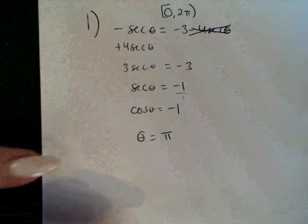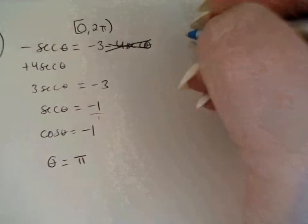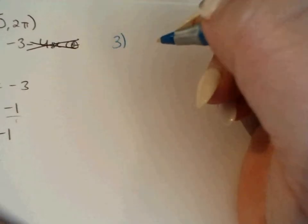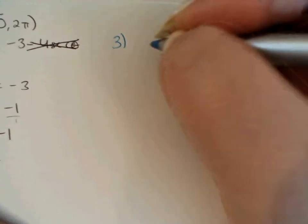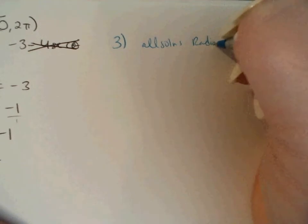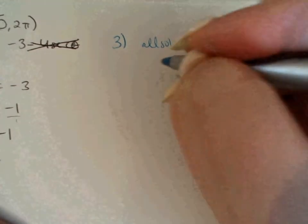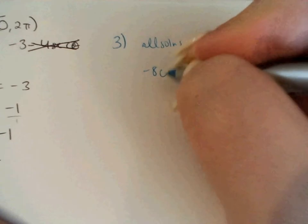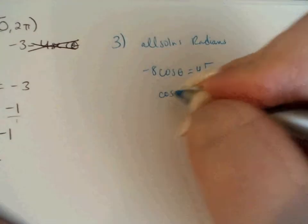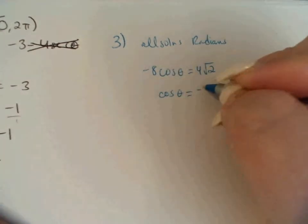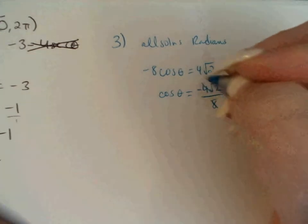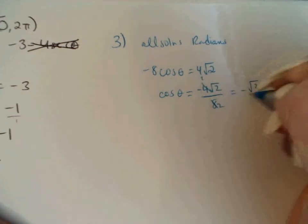Let's go to number 3. Number 3 says find all solutions to each equation in radians — so all solutions, and we need to be in radians. We're supposed to find the solutions to negative 8 cosine of theta equals 4 square root of 2. We want to get cosine of theta by itself, so we're going to divide by negative 8. I'm going to float the negative to the numerator, and then simplify the 4 and the 8 to one half.